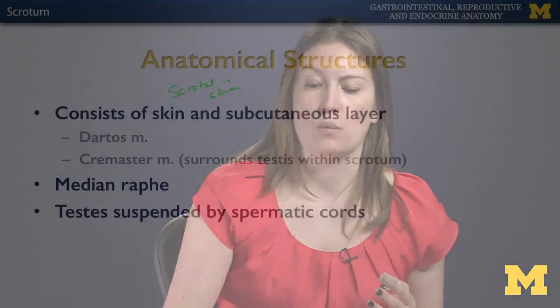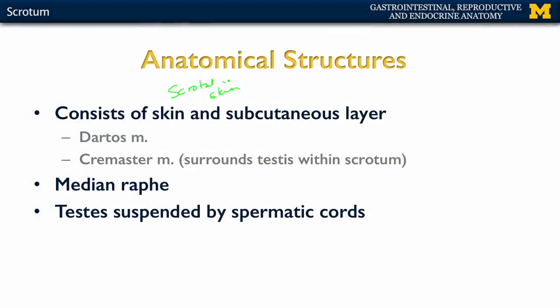Scrotal skin is going to be hair bearing. It's going to have sebaceous or oil glands as well as pseudoapocrine glands. Specifically when we're talking about those sweat glands, these are going to be apocrine sweat glands that are going to produce odor. Also what's unique about the skin is it's going to be highly pigmented in comparison to other areas of the body.